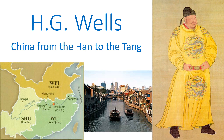One thing to note before we get into the substance is that when it comes to the way that Chinese names were transliterated into English at this time, the system that Wells was using is quite old — older even than the Wade-Giles system. For instance, the traveler usually referred to now as Xuanzang is referred to by Wells as Yuan Chuang. He also refers to an emperor named Taizong as one of the Tang rulers. These are fairly small differences, and if you were to go to Wikipedia and type in the spelling that H.G. Wells provides, you would get the correct article. I've tried to follow Wells' system as much as possible to make it authentic.